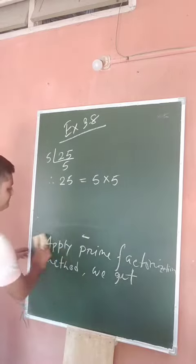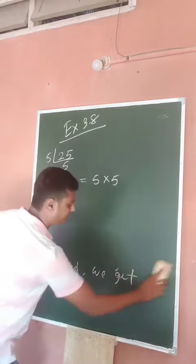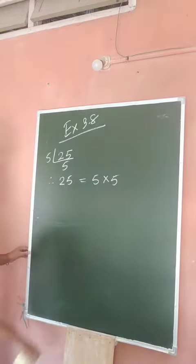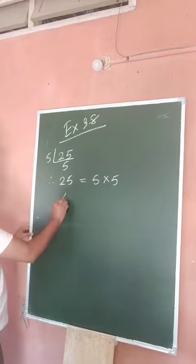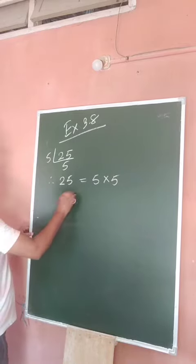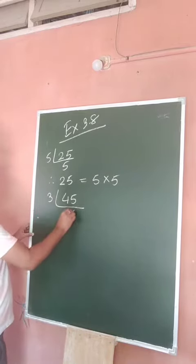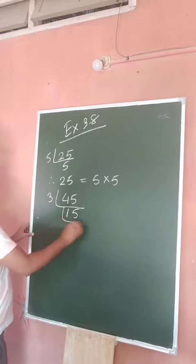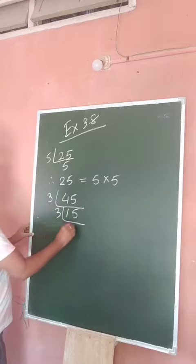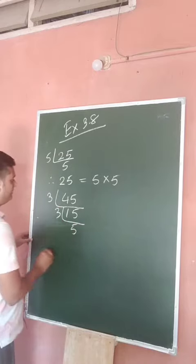Next one is 45. On 45 we apply: 3 into 15, again 3 into 5. Therefore 45 equals 3 into 3 into 5.